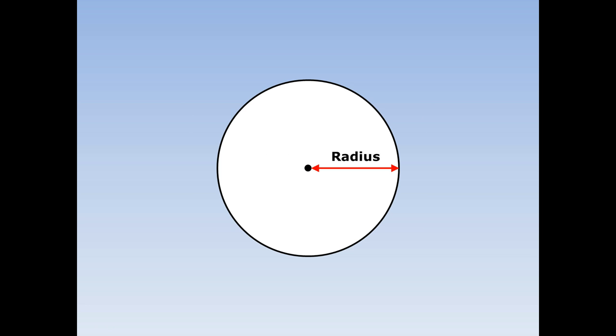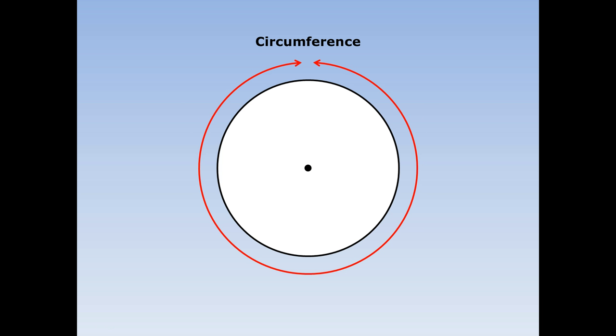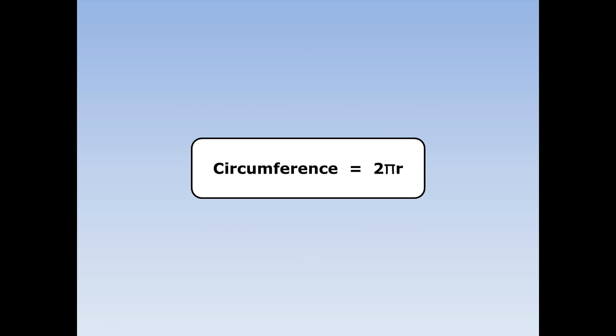Circumference of a circle. Let's remind ourselves about different bits of a circle. The distance from the centre to the outside is called the radius. The distance all the way around the outside is the circumference. To find the circumference from the radius, we use the formula: circumference equals 2 pi r.